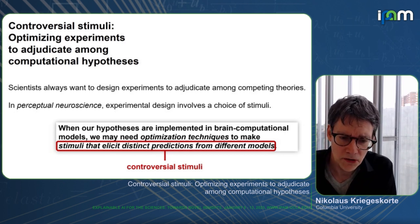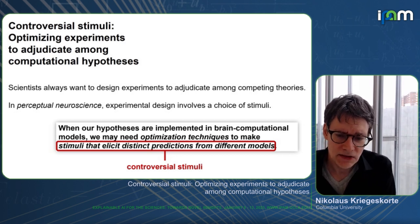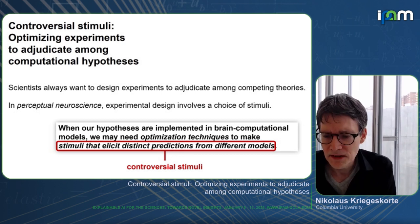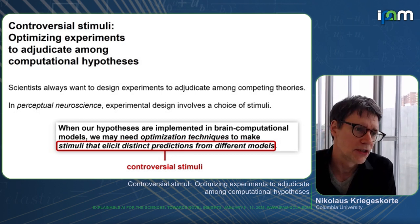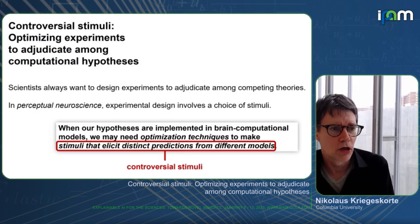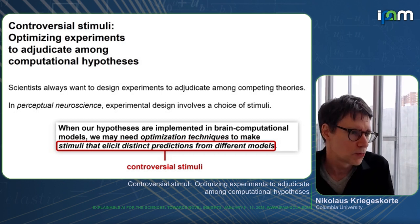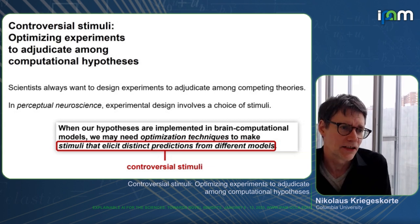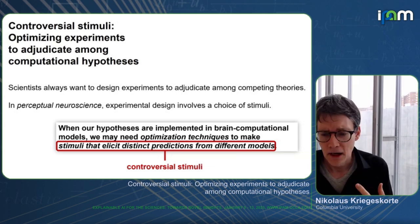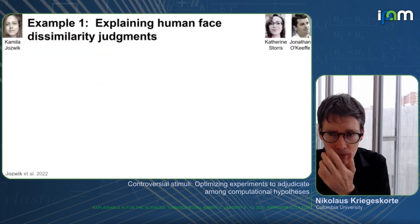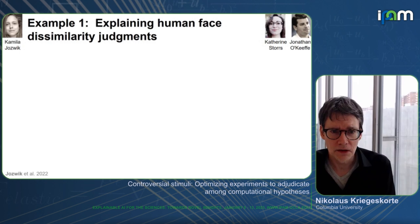The definition of controversial stimuli is: stimuli that elicit distinct predictions from different models. These stimuli are controversial between two models or among a set of models. They're not necessarily controversial between people at all. The idea of controversiality is simply that different models make different predictions for these stimuli.